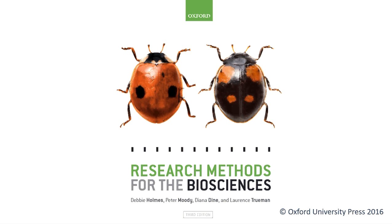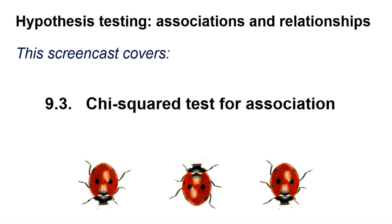Hello, welcome to another Research Methods for the Biosciences screencast for SPSS. This screencast covers section 9.3, chi-squared tests for association.